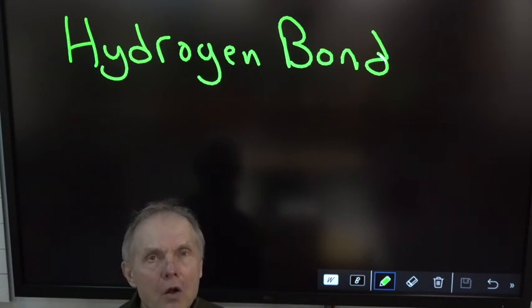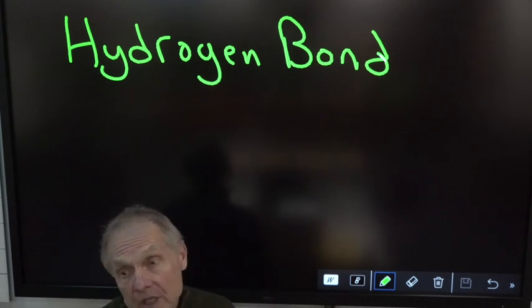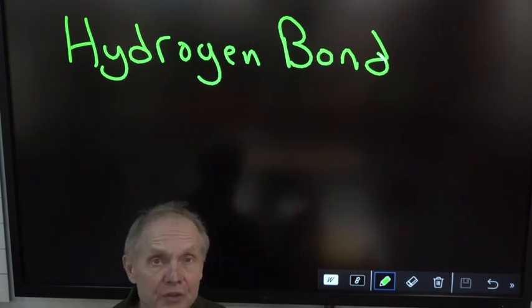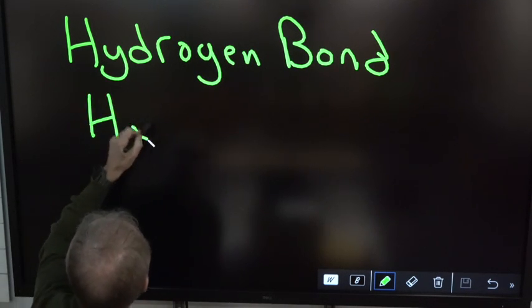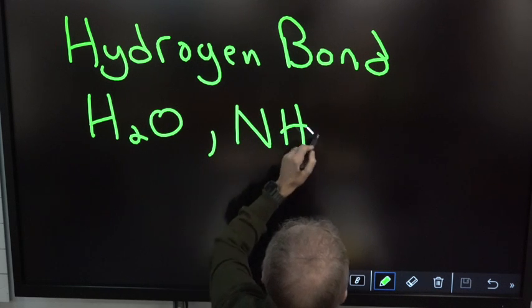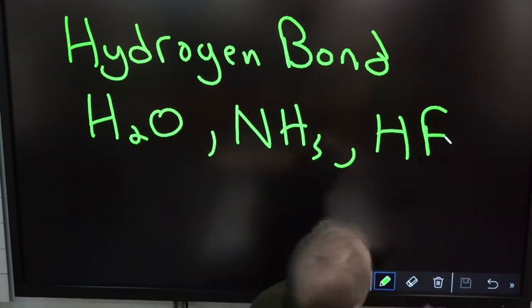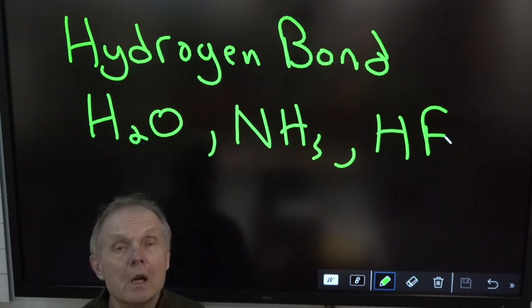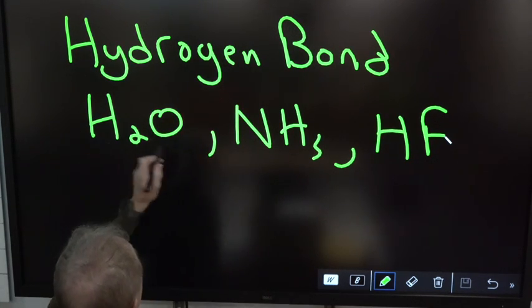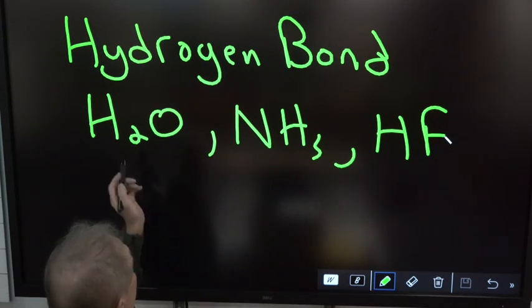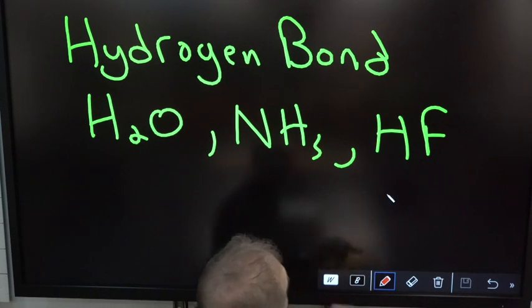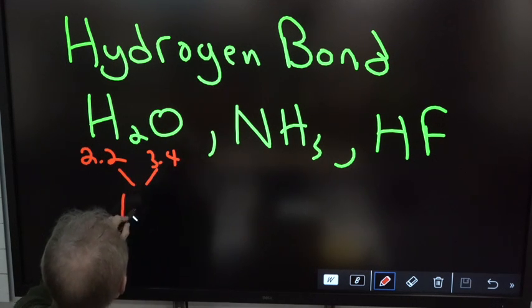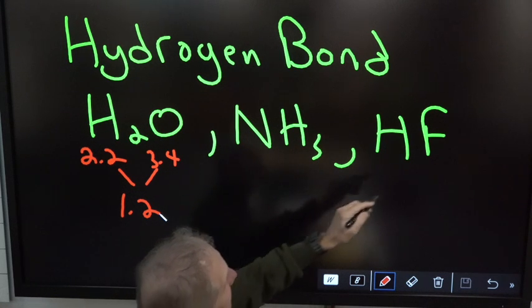In high school chemistry, you just have to know the bonds between strong dipoles — these three: H₂O, NH₃, and HF. These are all strong polar molecules or strong dipoles. A dipole is unequal sharing of electron pairs. How do you know they're strong? Because of the electronegativity difference. For H₂O: 2.2 and 3.4, that's a difference of 1.2. For NH₃: 0.8, and for HF: 1.8.